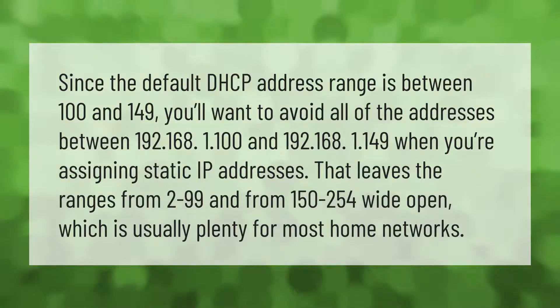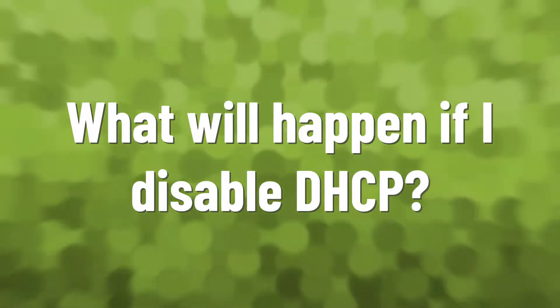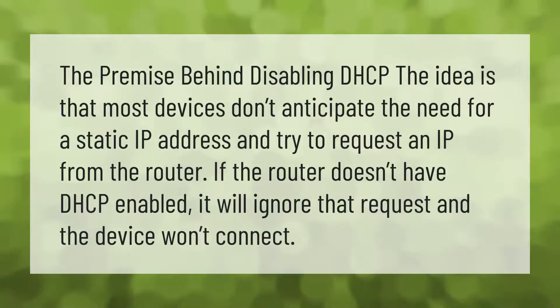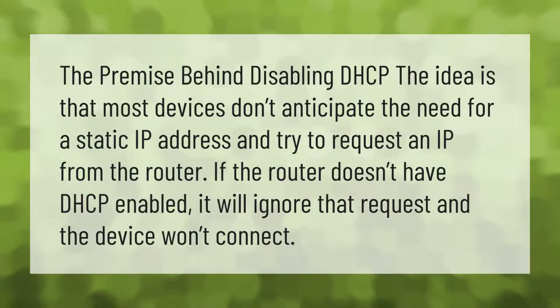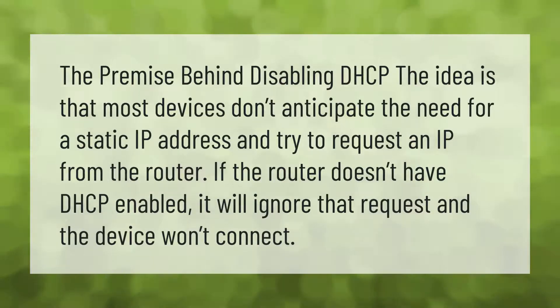The premise behind disabling DHCP: the idea is that most devices don't anticipate the need for a static IP address and try to request an IP from the router. If the router doesn't have DHCP enabled, it will ignore that request and the device won't connect.